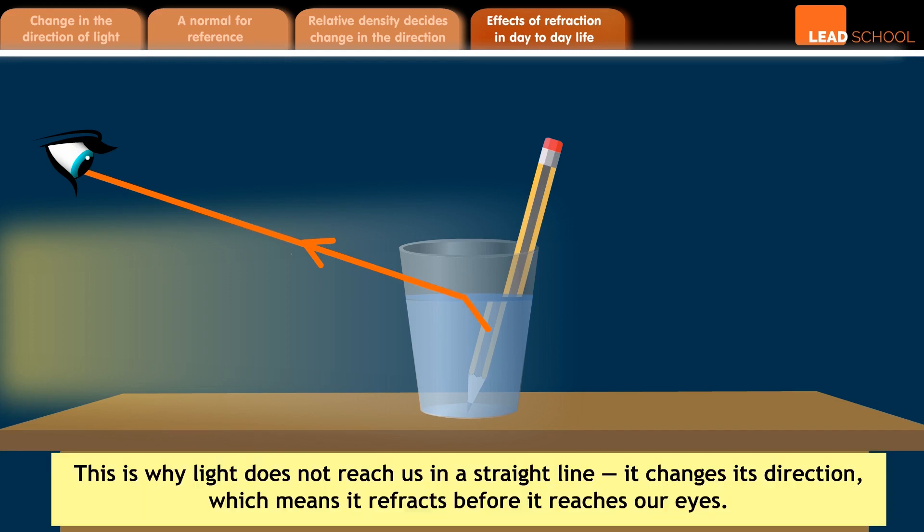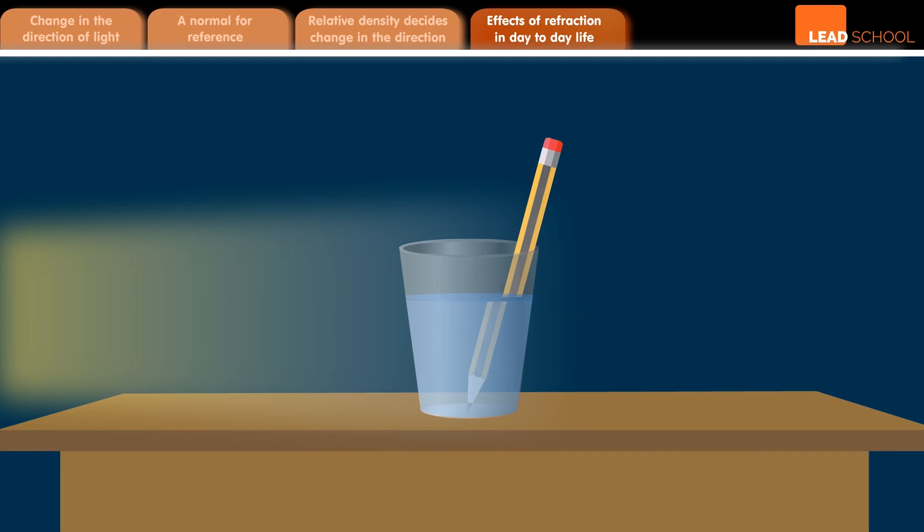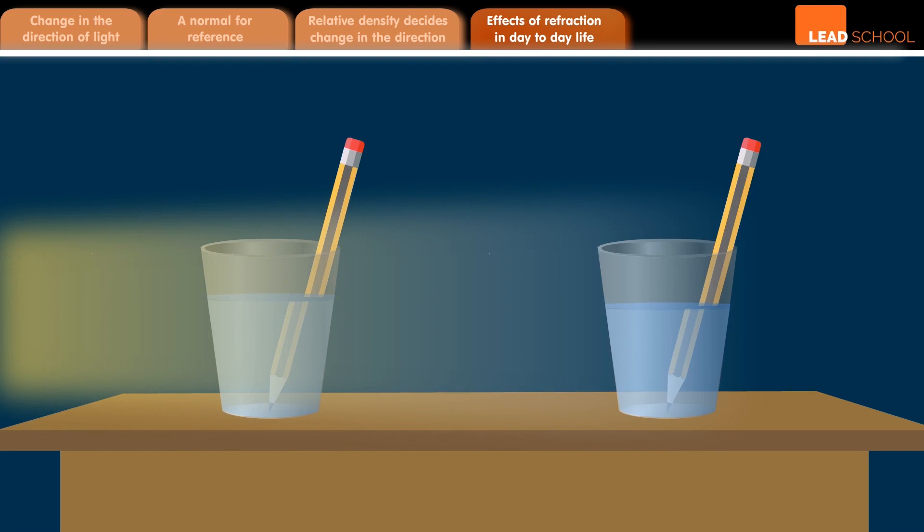This is why the light does not reach us in a straight line. It changes its direction, which means that it refracts before it reaches our eyes, which makes us feel that the position of that part of the pencil has shifted or that the whole pencil is no longer straight. Of course, in reality, it is still the same.